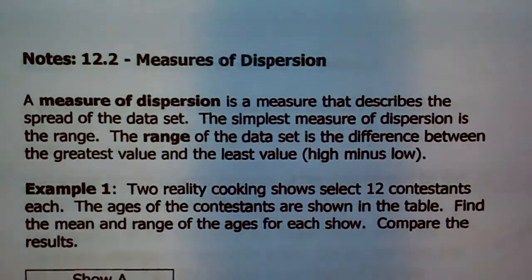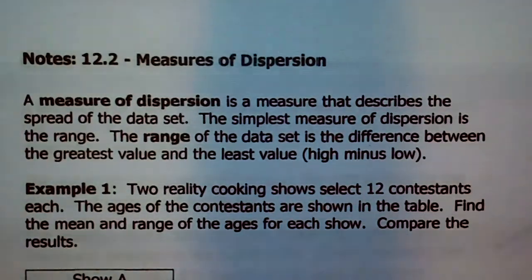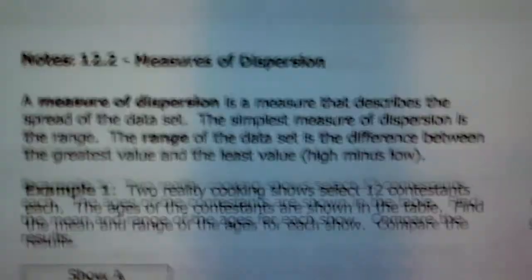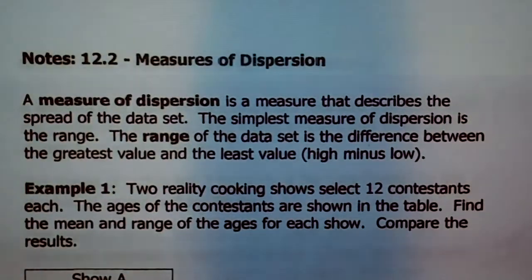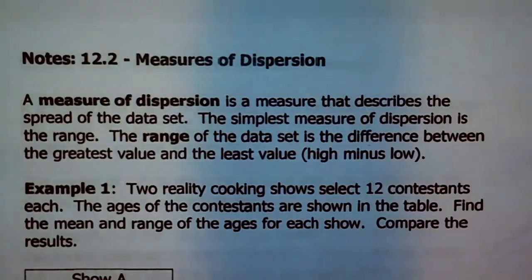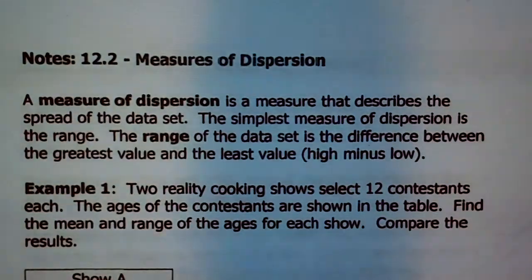The range of the data set is the difference between the greatest value and the least value. I'm sure you remember calculating range back in the day — you just take the highest value minus the lowest value. That's a measure of dispersion that lets you know how spread out the data is.